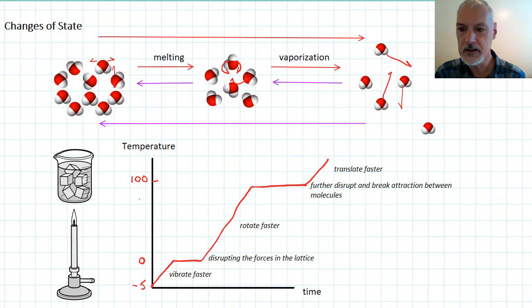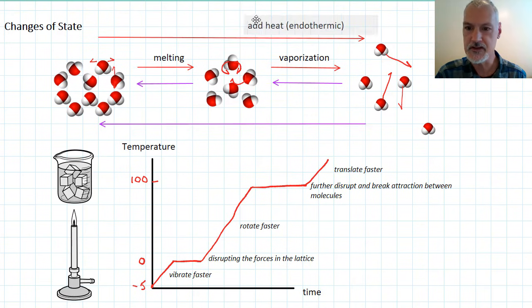So, the important thing to note here is while we're making the change of state from melting or vaporization, we don't have a change in temperature. All this time, while we're moving in this direction, we have what we call the addition of heat or an endothermic process.